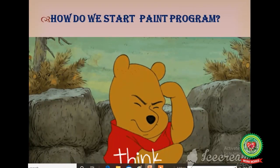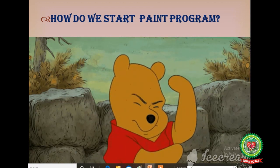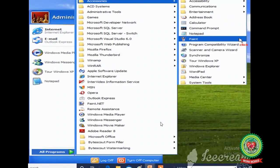The question arises here: how do we start the paint program? The steps to start paint program are — Number 1: Click on the Start button. Number 2: Click on All Programs. Number 3: Click on Accessories. Number 4: Click on Paint.